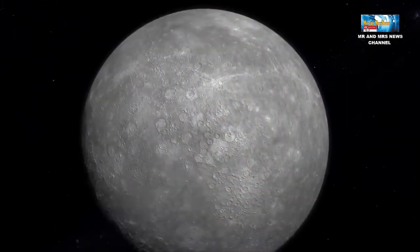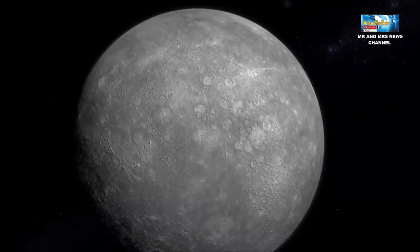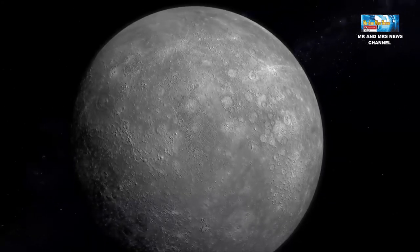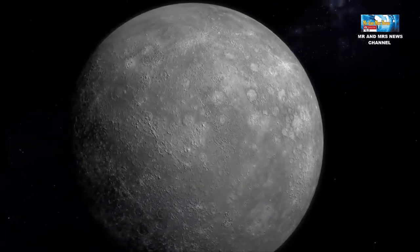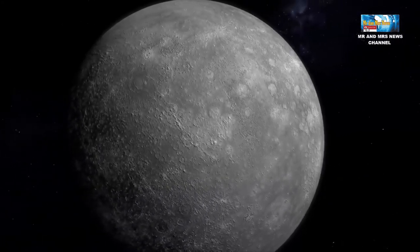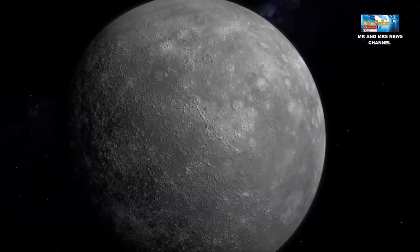Merkurius terbentuk sekitar 4,5 miliar tahun yang lalu. Ini terjadi ketika gravitasi menarik gas dan debu yang berputar bersama-sama untuk membentuk planet kecil yang paling dekat dengan matahari.